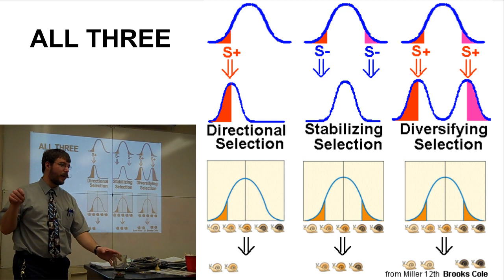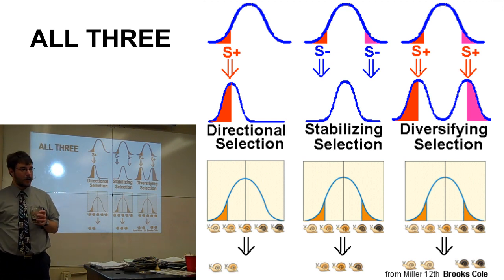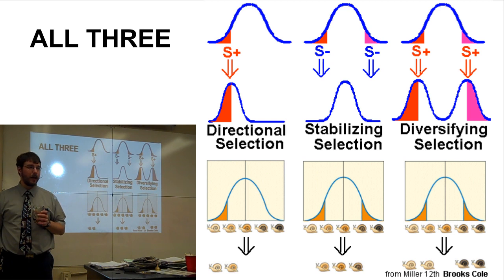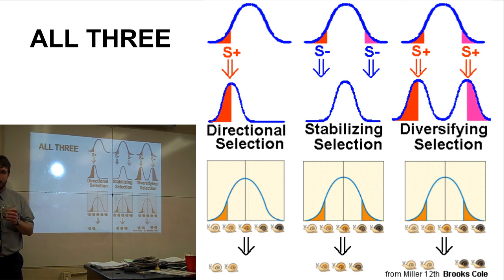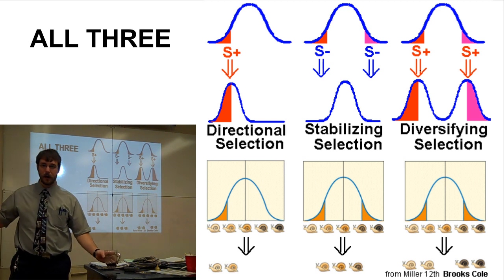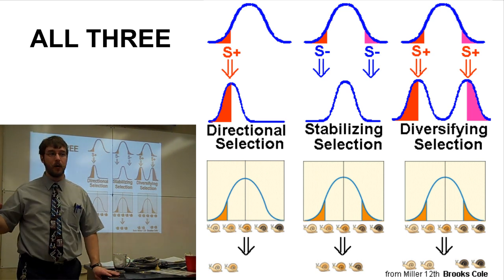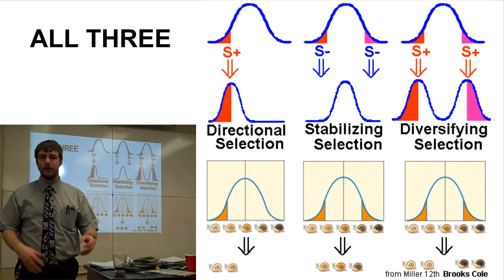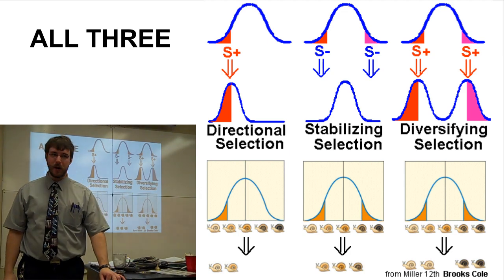What type of selection do the male lizards have? For those who learned about the male lizards: bigger is better. So what kind of selection is that? If bigger is better — that's directional selection. The mode is going to shift towards more big lizards. And that's the three main types of selection.